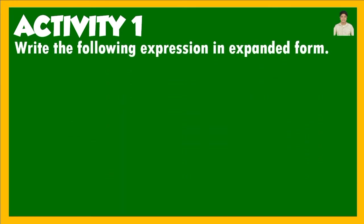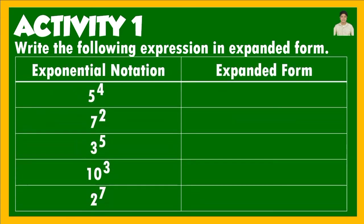For Activity 1, write the following expressions in expanded form. We have a table — on the left side is the exponential notation consisting of a base and an exponent; on the right, the expanded form. For example, 5 raised to the 4th power is written as 5 times 5 times 5 times 5 — it repeats 4 times. The expanded form shows how the base repeats according to the exponent.